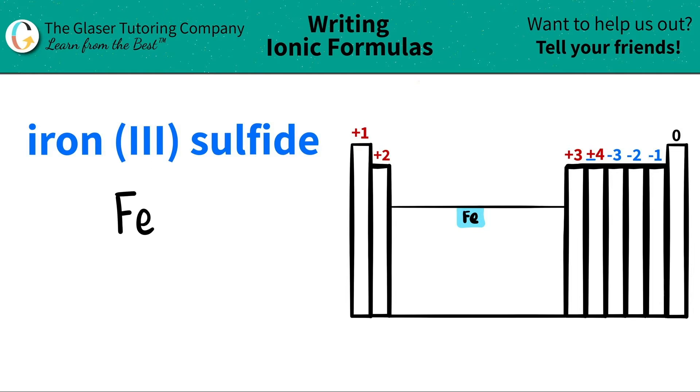So in this case, if this is a three, iron was a plus three. And I know that it's a positive because all metals are positive charges. They always lose electrons and not gain them.